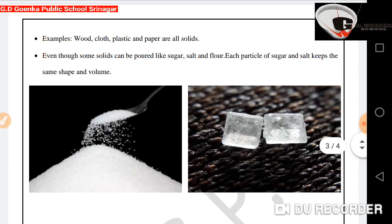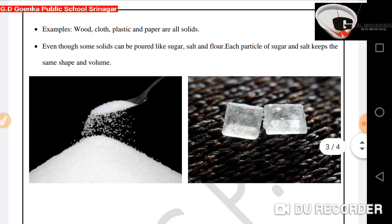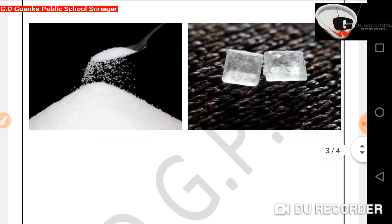Examples: wood, cloth, plastic, and paper are all solids. Even though some solids can be poured like sugar, salt, and flour, each particle of sugar and salt keeps the same shape and volume.